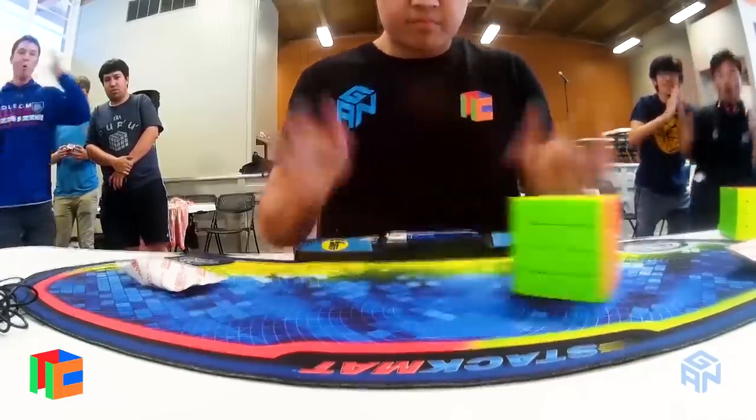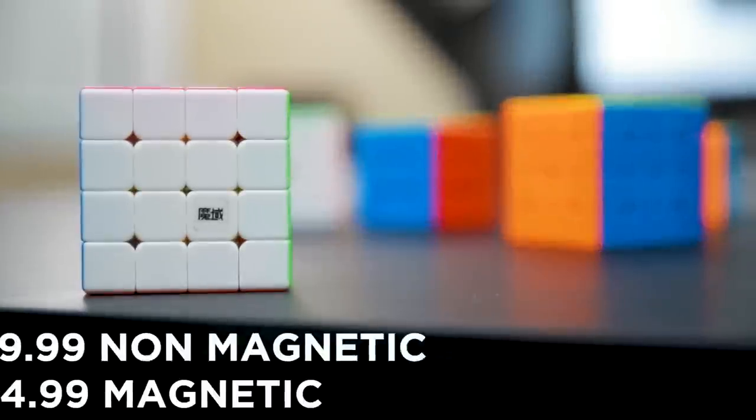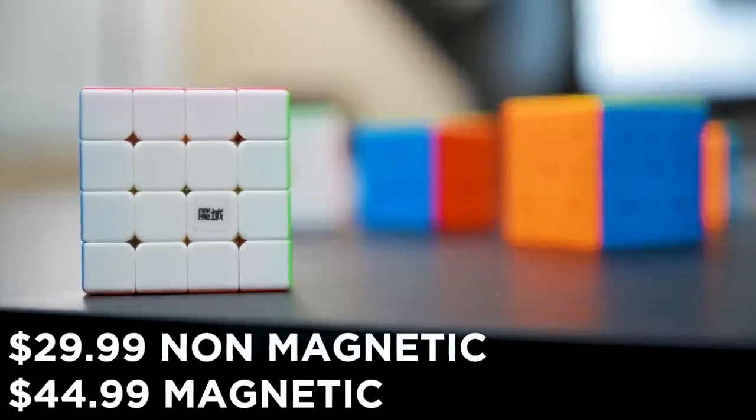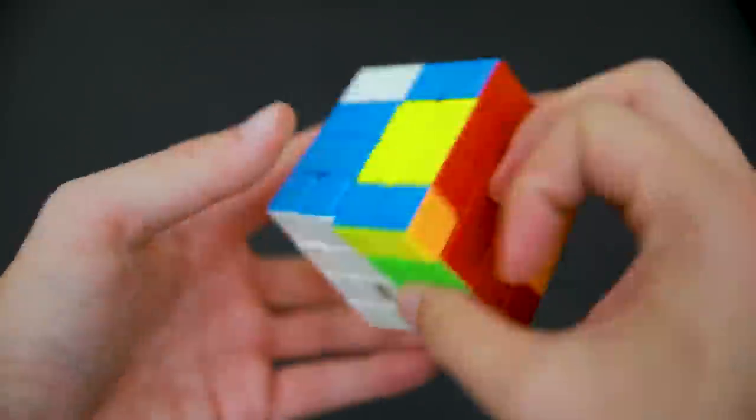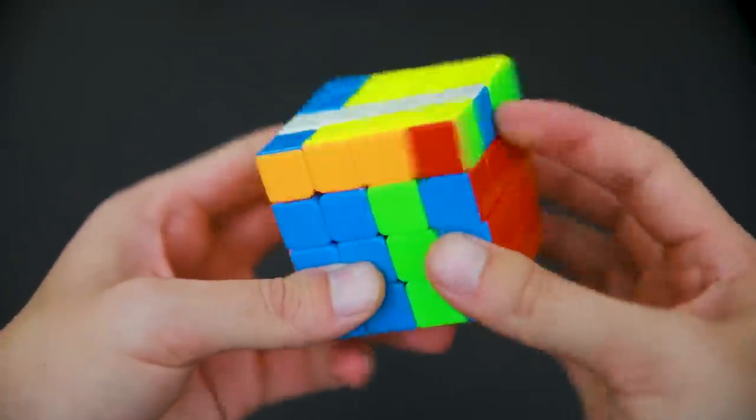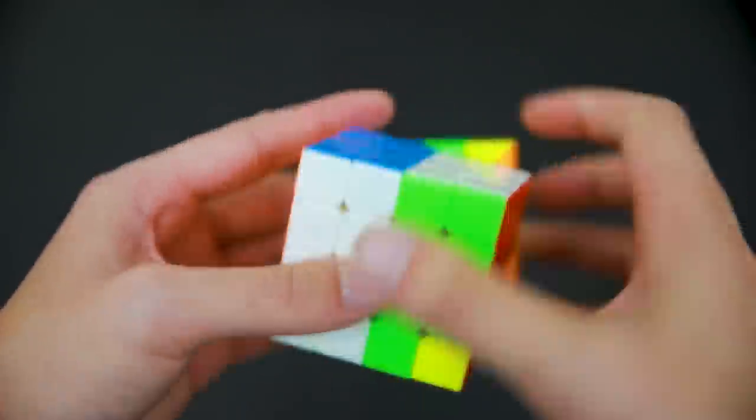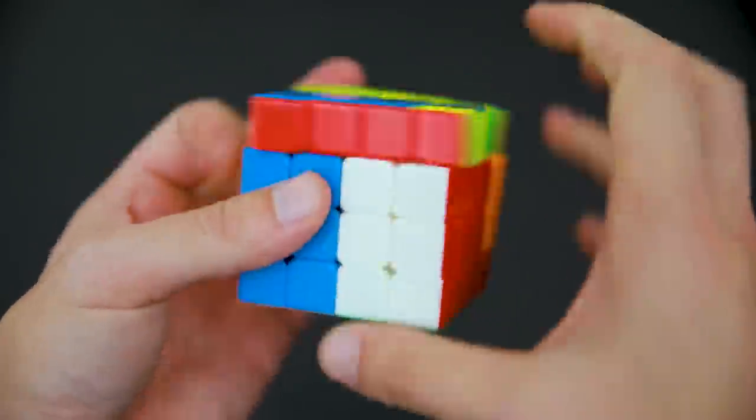Attention should also be given to the Moyu Aosu GTS2M. This cube seems to have slipped under the radar a little, but if you do try it, you'll quickly notice a phenomenal 4x4 with great potential. It requires very little setup out of the box to achieve very nice performance.